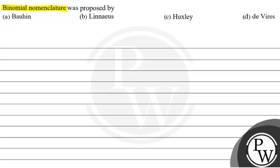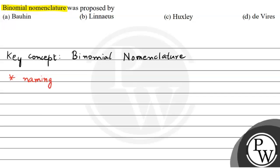In this question, the first concept that comes is to understand what is binomial nomenclature. Binomial nomenclature is a technique that we use for naming or giving names to an organism. So, naming of organisms is known as binomial nomenclature. In binomial nomenclature, we give every organism a scientific name, and there are particular rules for writing this scientific name.